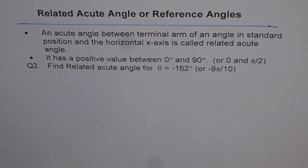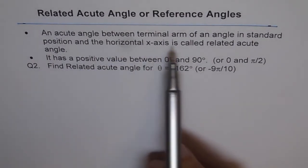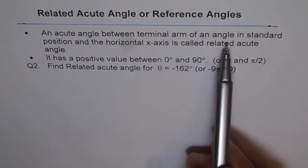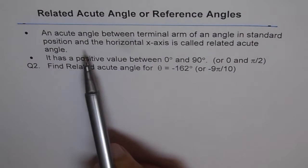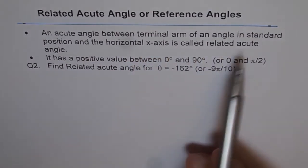Related acute angle or reference angle. An acute angle between terminal arm of an angle in standard position and the horizontal x-axis is called related acute angle.